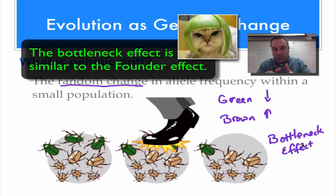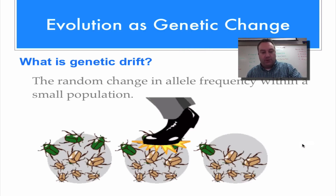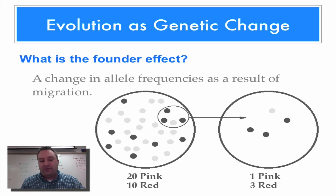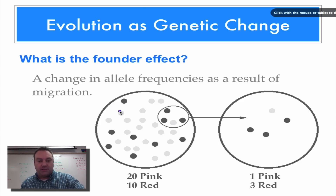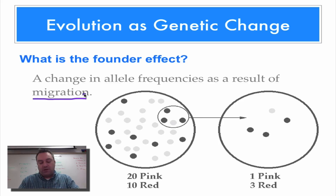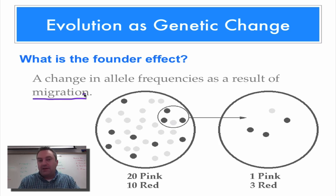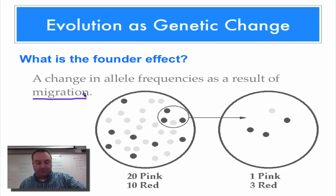The gene pool has kind of been shoved into a small portion — that's the bottleneck effect. Related to this is the founder effect, which is a change in allele frequencies that occurs as a result of migration. Part of the population moves to a new location, but that part may not represent the gene pool as a whole.